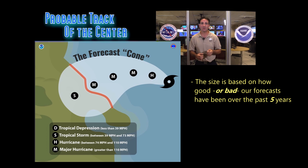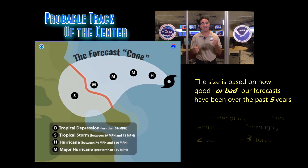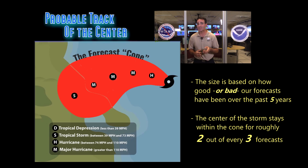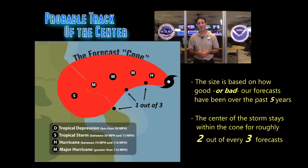We draw the cone based on how good or bad our forecasts have been over the past five years. The center of the storm ends up staying inside the cone for roughly two out of every three of our forecasts. This also means that the center of the storm will sometimes move outside of the cone, occurring once out of every three of our forecasts.